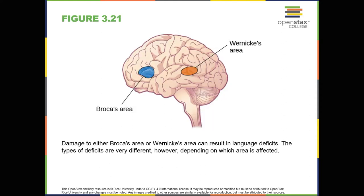The temporal lobe is located on the side of the head — with temporal meaning near the temples — and it's associated with hearing, memory, emotion, and some aspects of language. The auditory cortex, the main area responsible for processing auditory information, is located within the temporal lobe. Wernicke's area, important for speech comprehension, is also located here. Whereas individuals with damage to Broca's area have difficulty producing language, those with damage to Wernicke's area can produce sensible language, but they're unable to understand it.